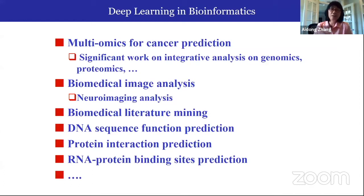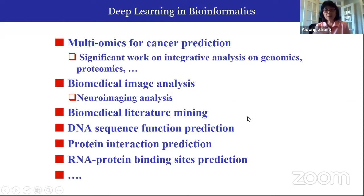We have seen lately deep learning applied to bioinformatics. The majority of research is in multi-omics for cancer prediction because omics data have been generated a lot lately. We also see biomedical image analysis, literature mining, DNA sequence function prediction, protein interaction prediction, and RNA protein binding prediction.